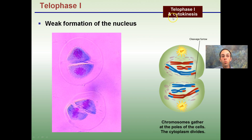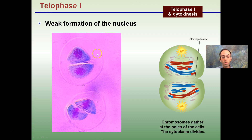Telophase I and cytokinesis involves a weak formation of the nucleus, because the cell is going to divide again. A nucleus begins to form but will slowly divide and break apart further.